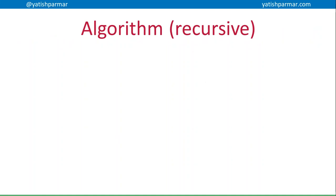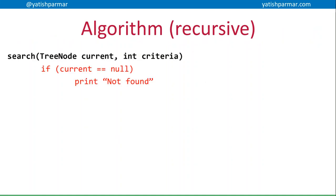So basically, a recursive algorithm for this is going to look something like this. I have my search method, I need to pass it the current node that I'm looking at, and I need to pass it the criteria that I'm searching for.